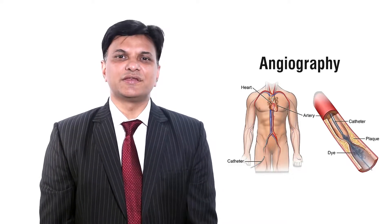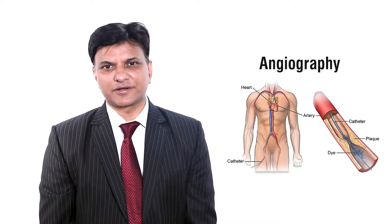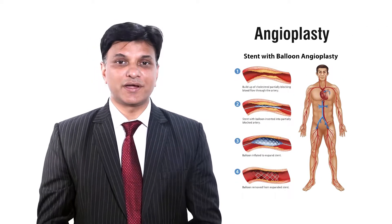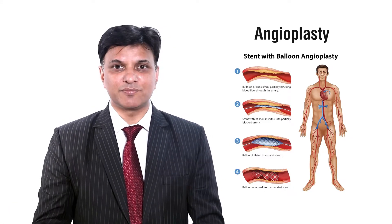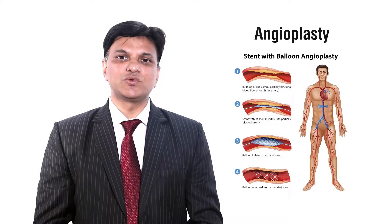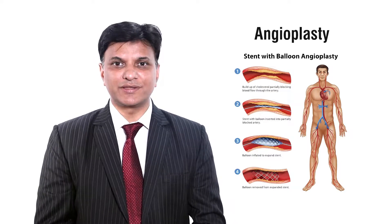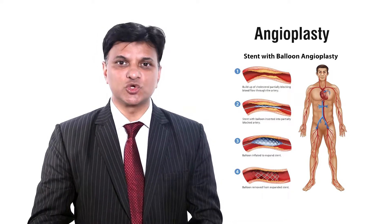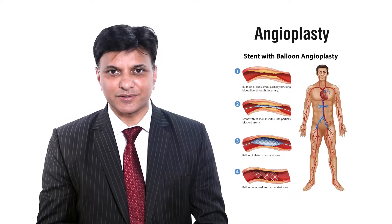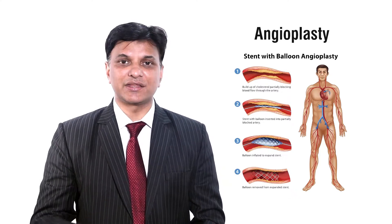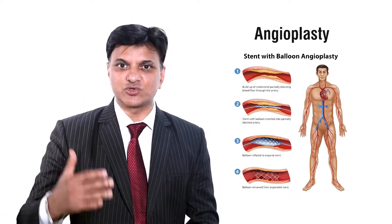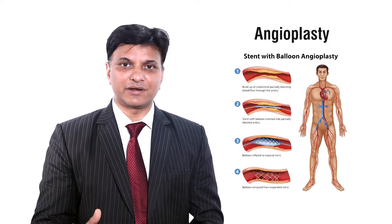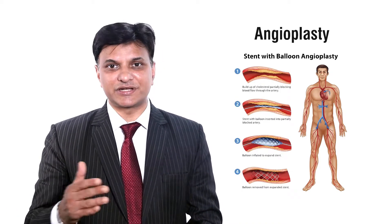Coronary angioplasty is an invasive way of treating a blocked artery. We do this procedure under local anesthesia, either through the wrist or through the groin, without putting the patient to sleep or making any cuts. We puncture the artery in the wrist or groin, then pass a tube down the artery into the heart. We inject dye and see how it flows within the artery to find any blockage — that is angiography.